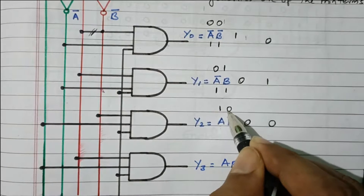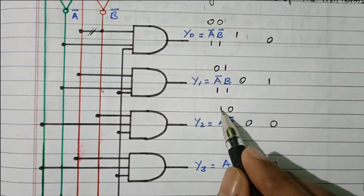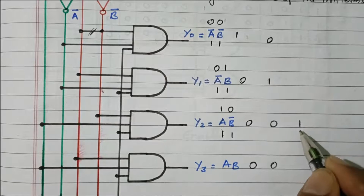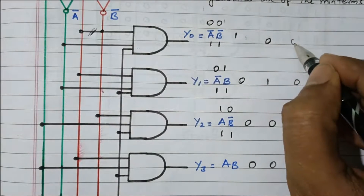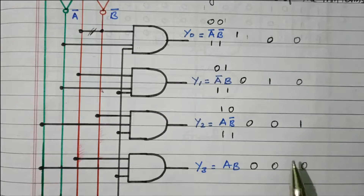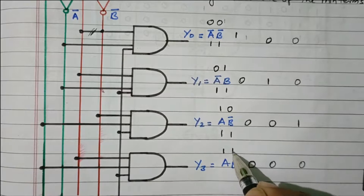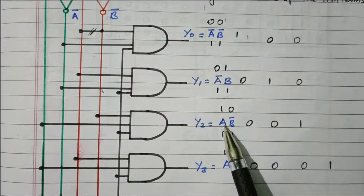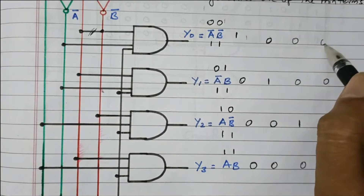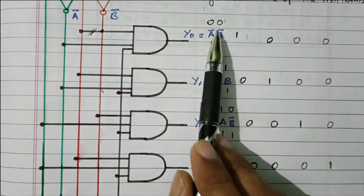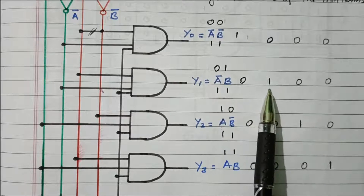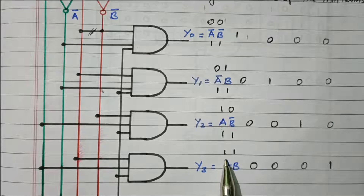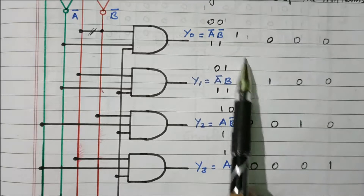The third possibility is 1,0, for which we get Y2 as 1. A equals 1 and B is 0, but B-bar will be 1. So both inputs to the Y2 AND gate are 1, giving a high output; all others automatically become 0. The fourth possibility is 1,1. Both A and B are high, so we get 1 as the output for Y3. For the other gates, B-bar or A-bar becomes 0, so those outputs are 0. So we get Y0=1 for 00, Y1=1 for 01, Y2=1 for 10, and Y3=1 for 11.